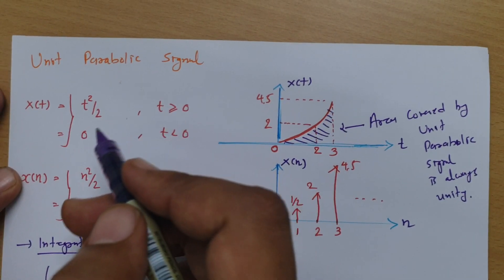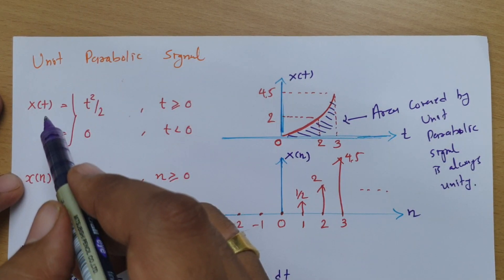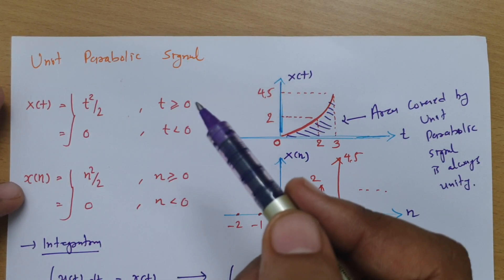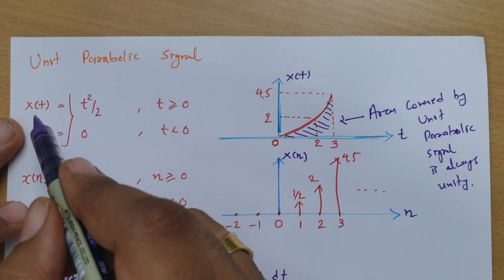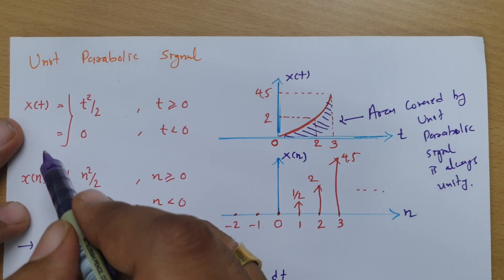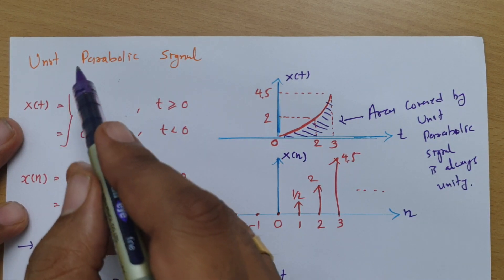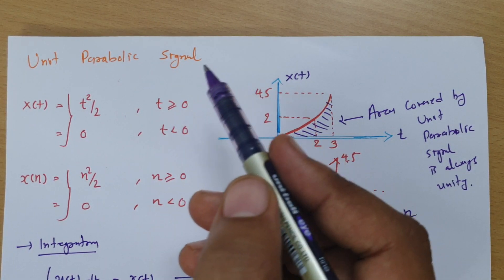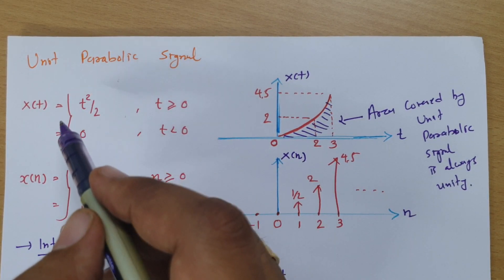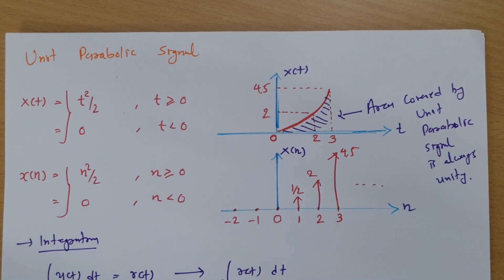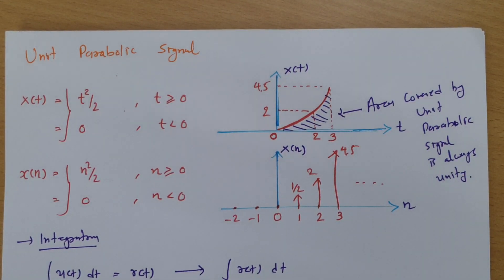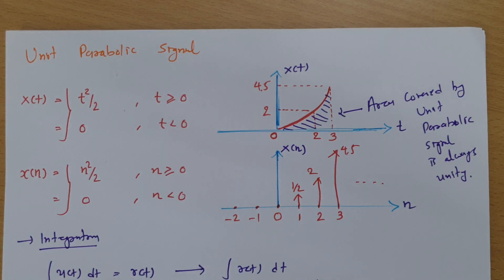To find the relationship of parabola with ramp, we need to do differentiation once. To find the relationship of parabola with step, we need to differentiate twice — double differentiation. I hope you have understood this session. Thank you so much for watching. Please give your valuable suggestions, and based on them, I will place future videos that will help students.